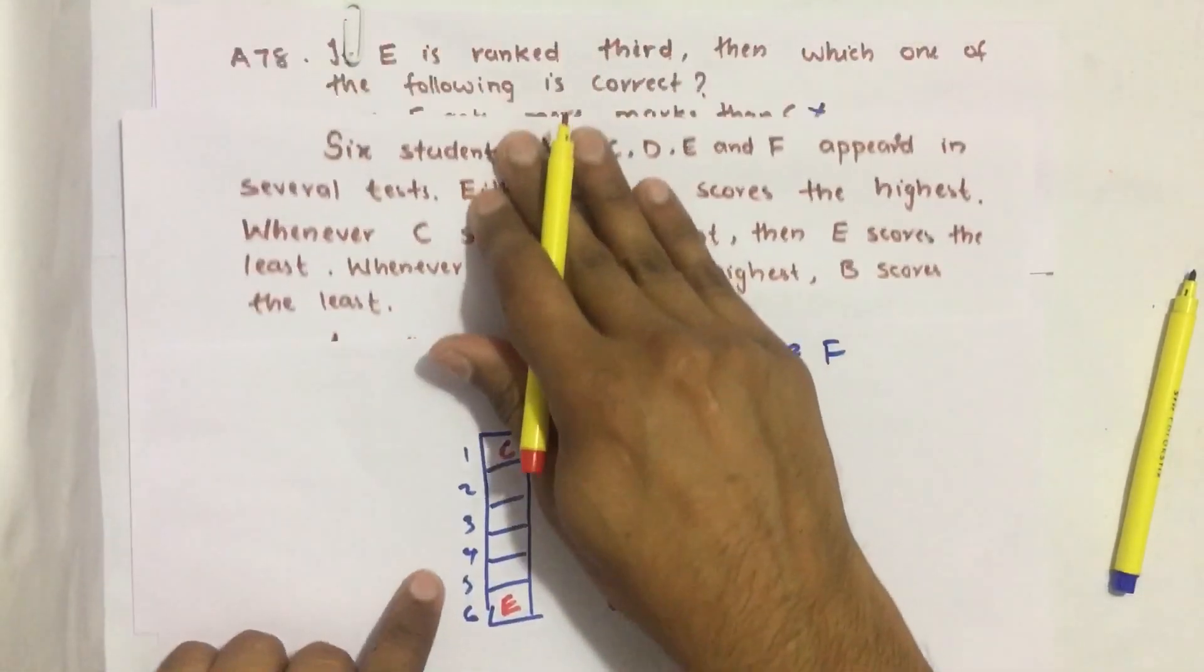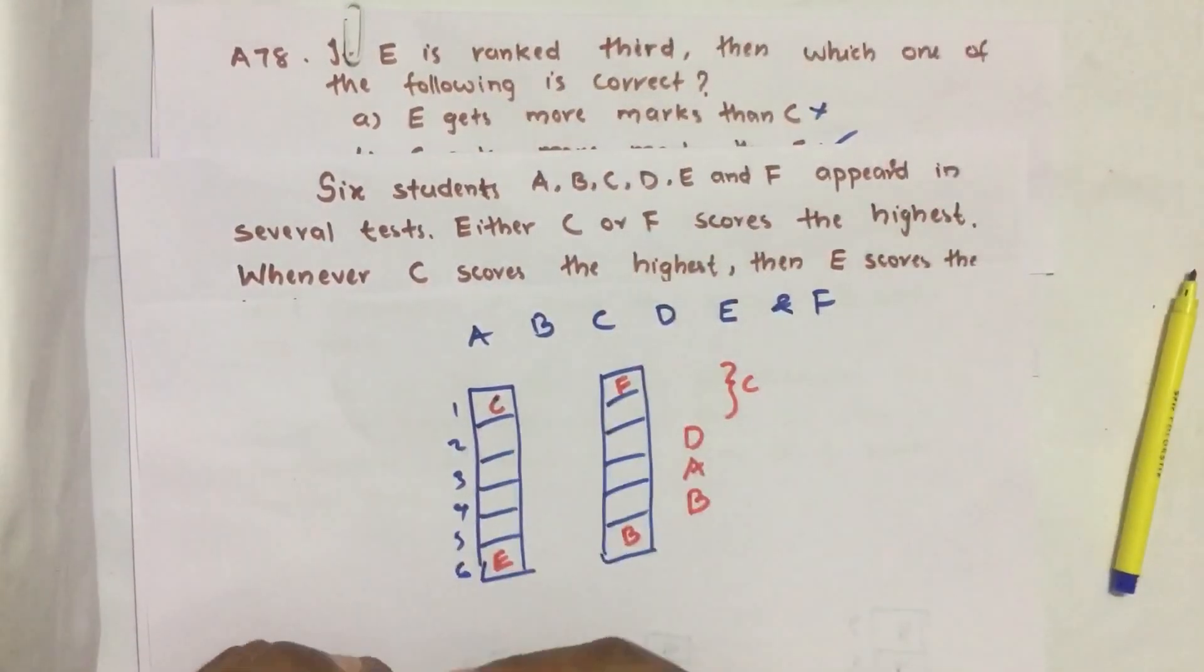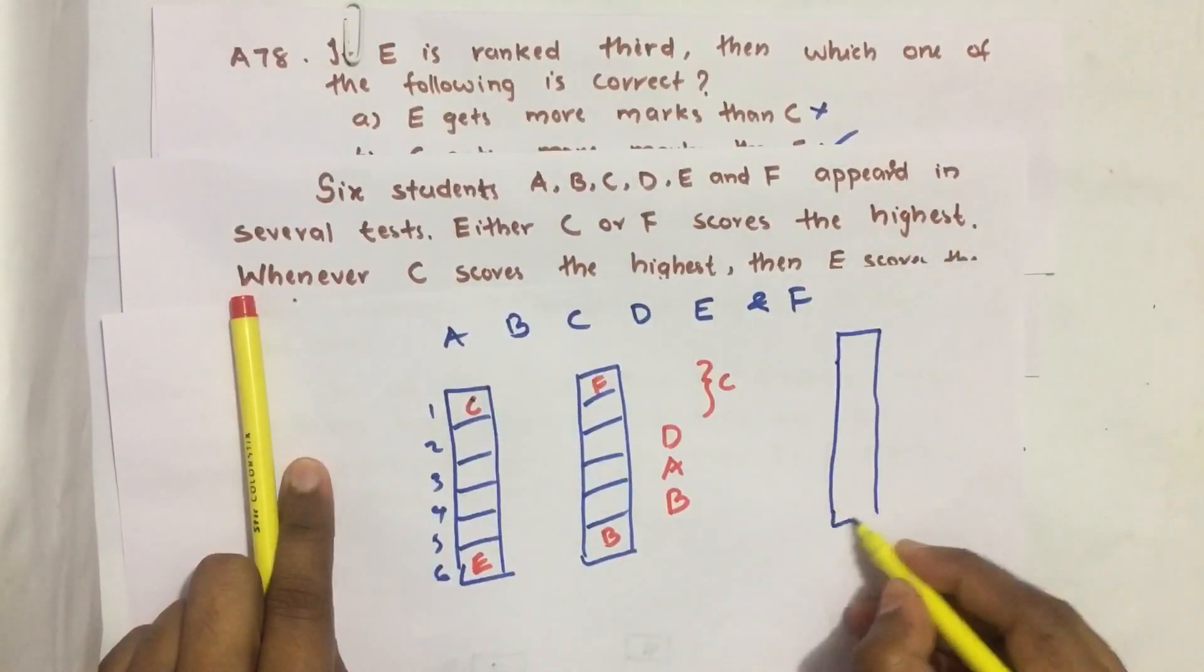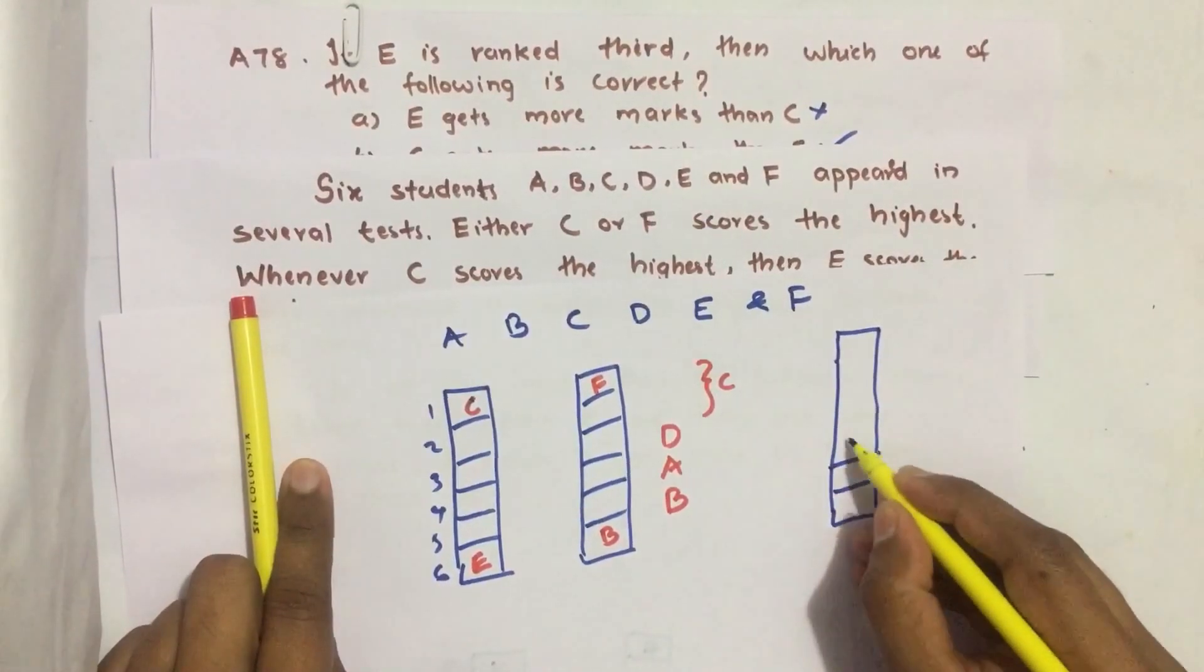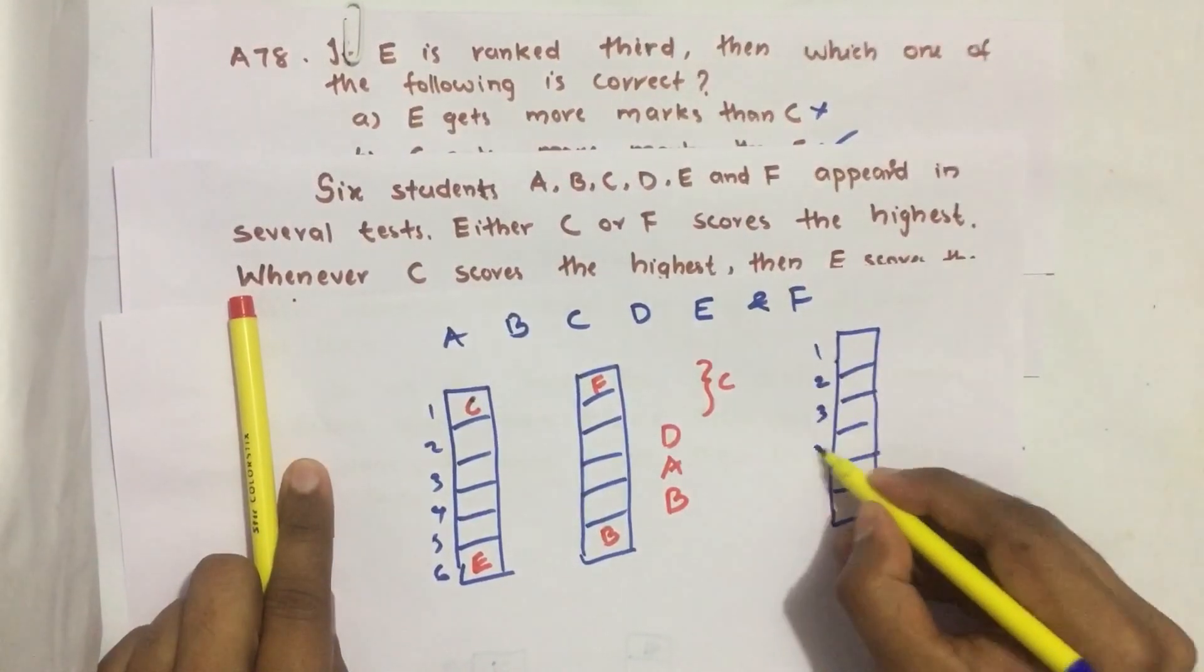Now let us come to the question. If E scored third - one, two, three, four, five, six - E scored third.